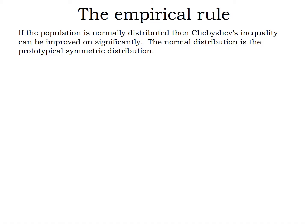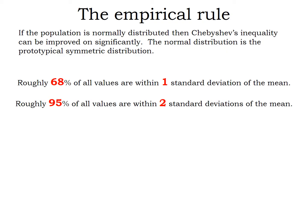The empirical rule says roughly 68% of all values are going to be within one standard deviation of the mean, 95% will be within two standard deviations of the mean, and 99.7% will be within three standard deviations of the mean.